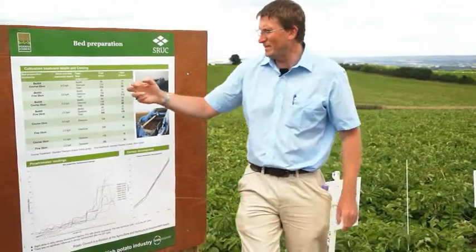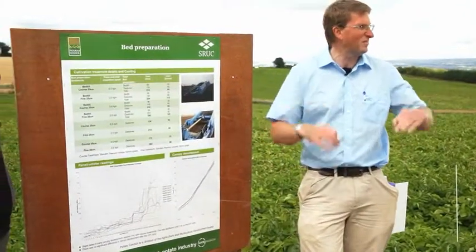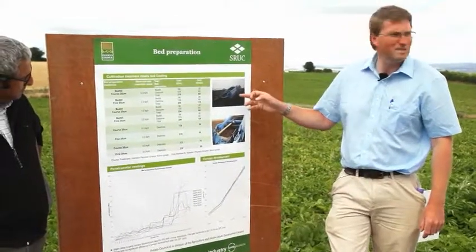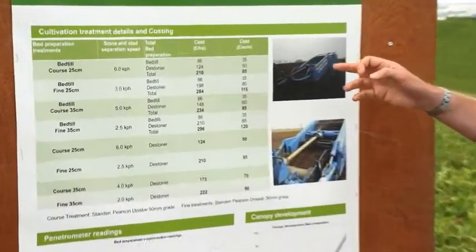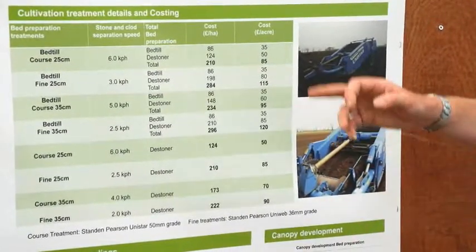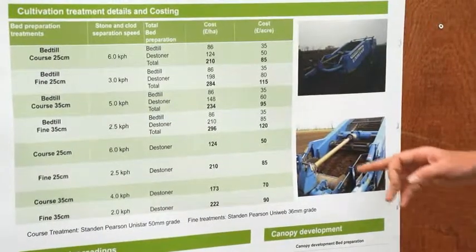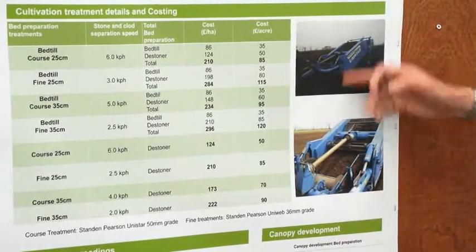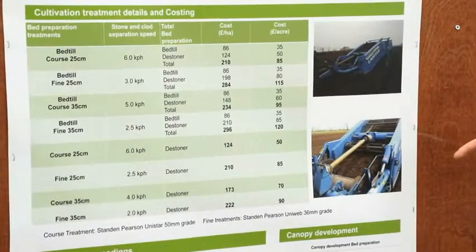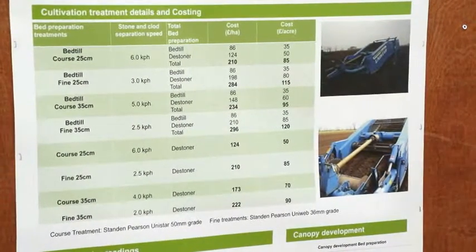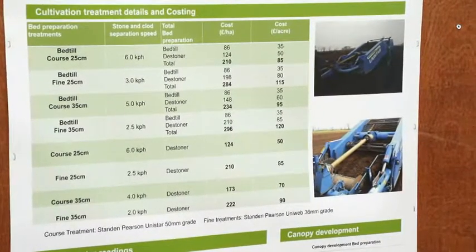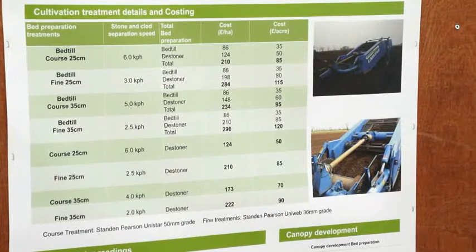We created a coarse bed — going for extremes to create a difference — with a Uni Star set at 50mm clod size. At the other extreme, we had a Uni Web machine, both supplied by Standen for a second year. They helped with the trials, and the Uni Web is a 36mm 3-web machine.